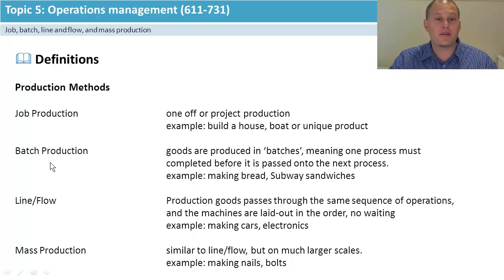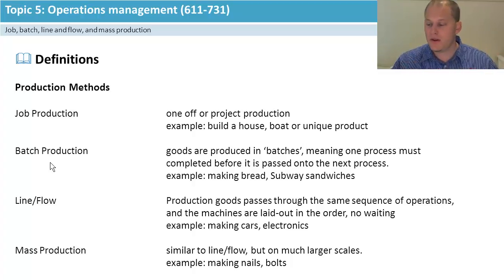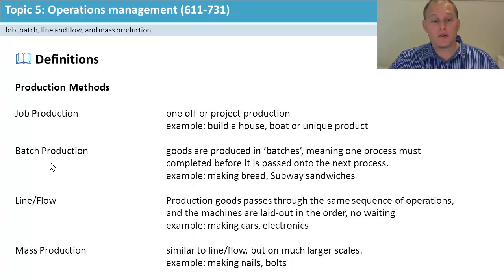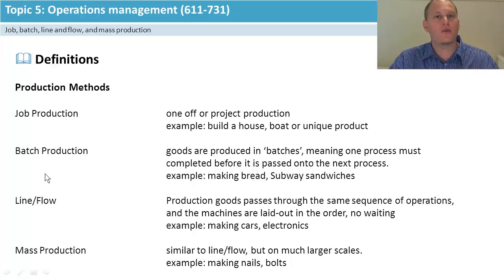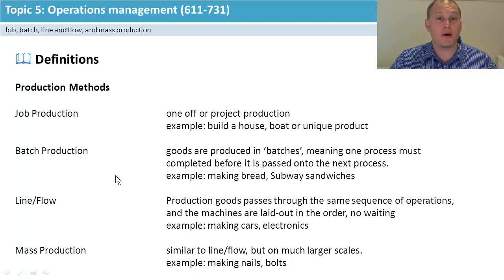Batch production is like doing things in big groups — you might have four things happen, then they move on to the next four, then the next four. Think about Subway sandwiches: different people pick different breads, then it goes to different meats, then salads, then condiments, then you wrap it all up. Job is like ones and ones; batch is like fours and fours — you're doing larger quantities, so the output steps up.